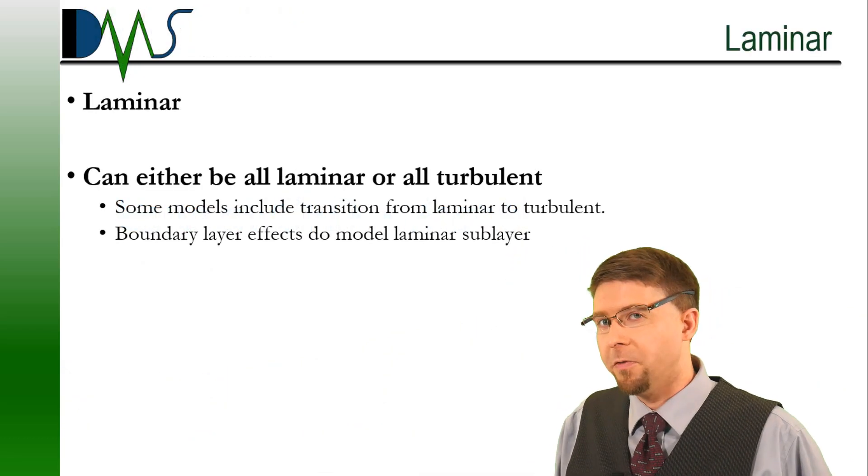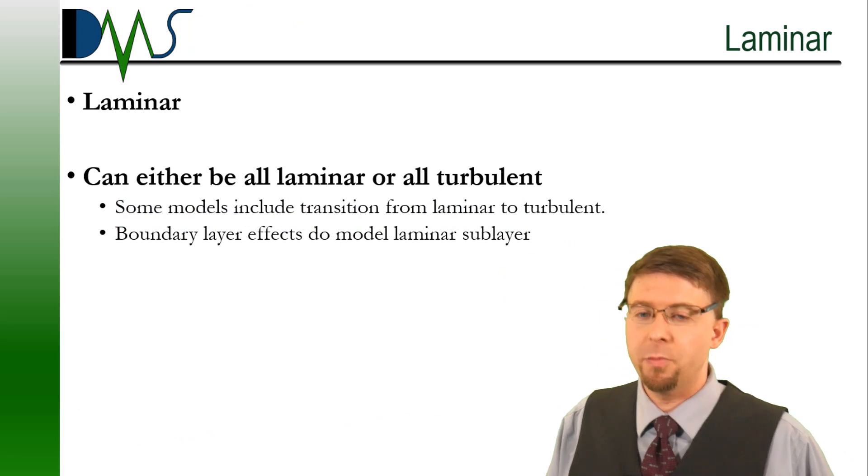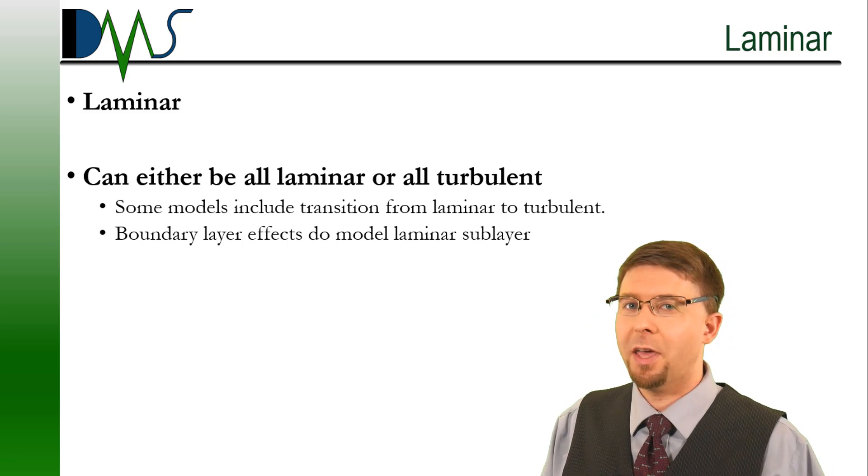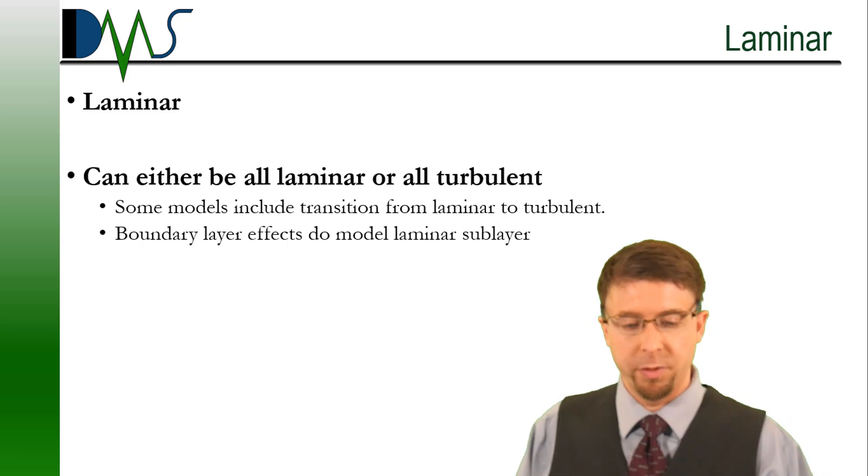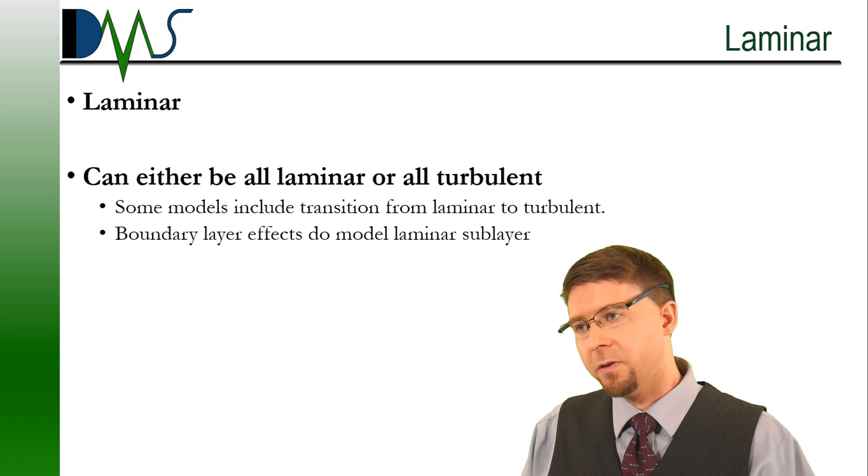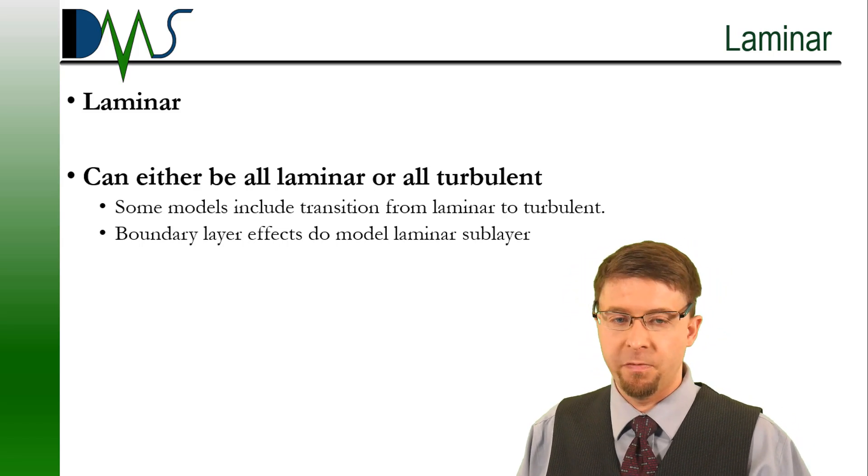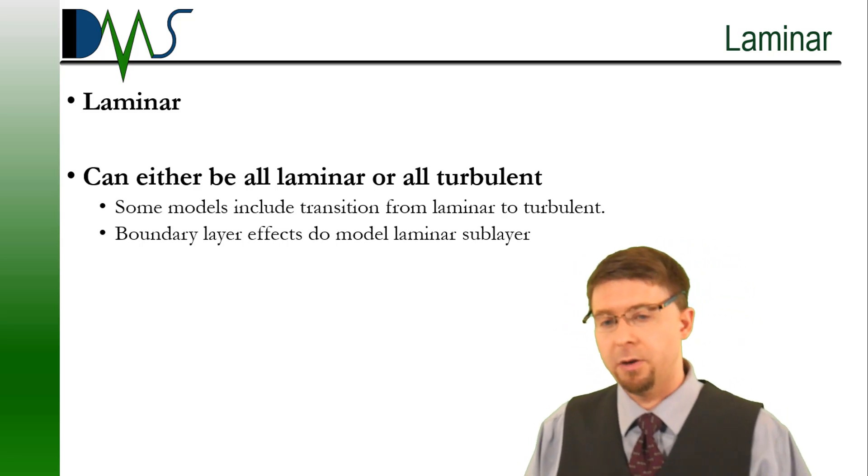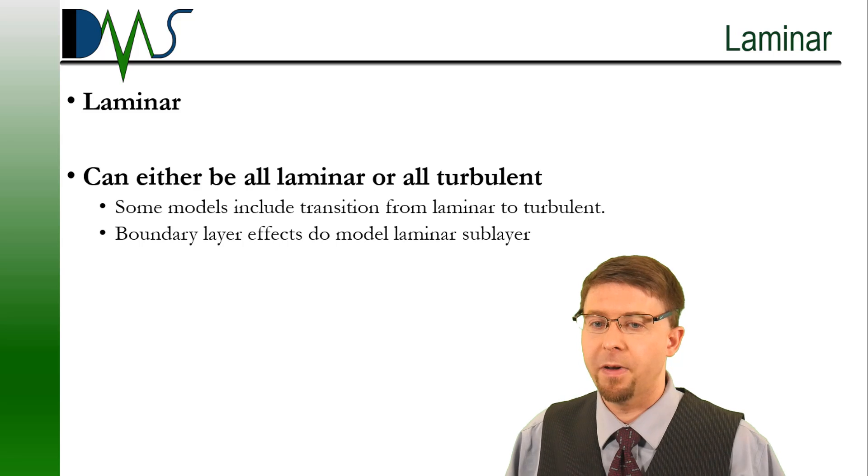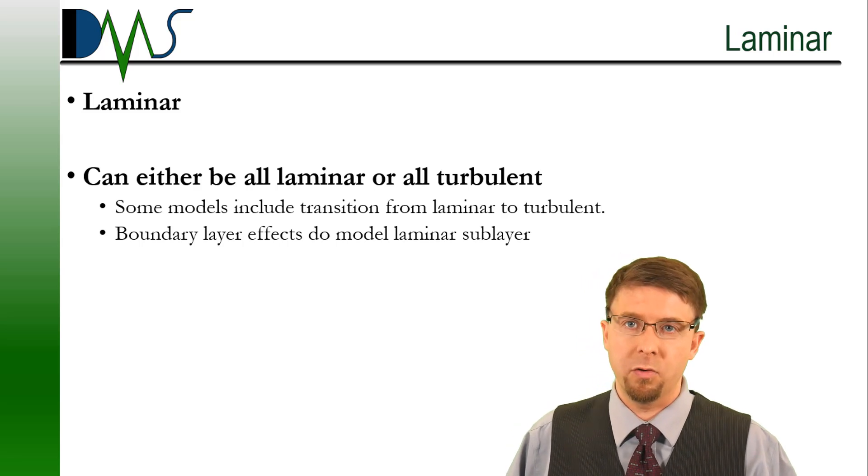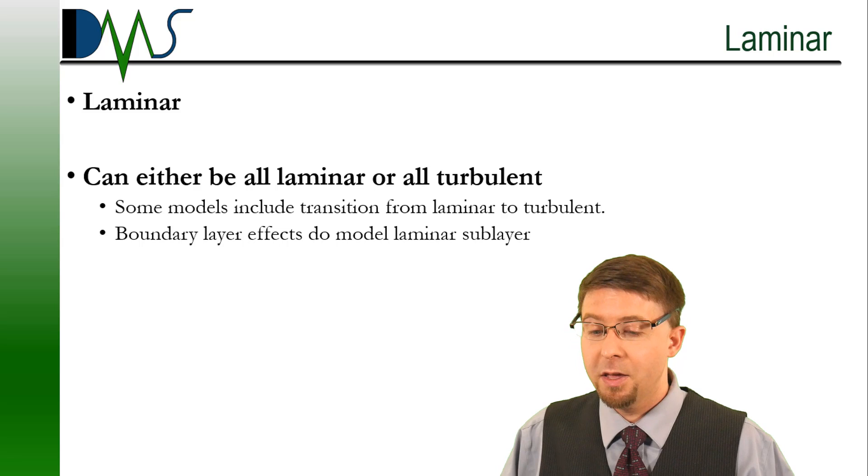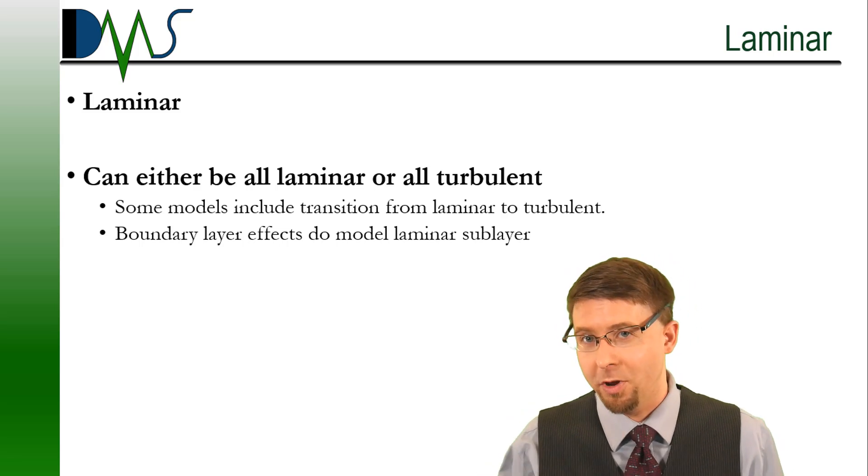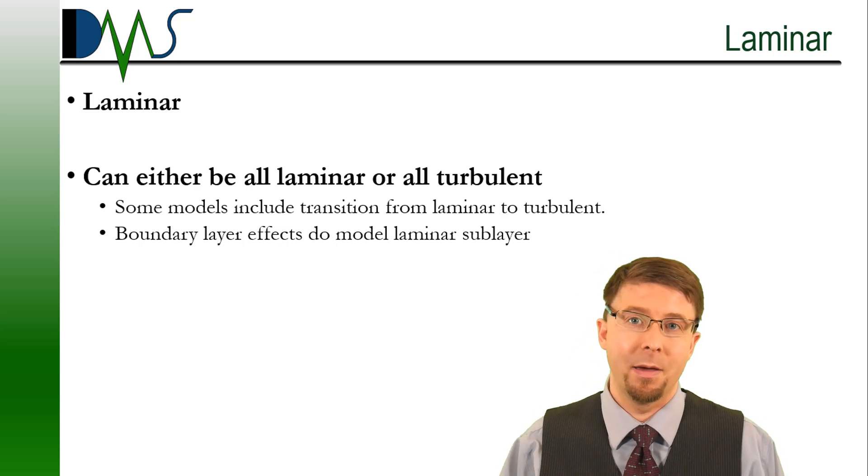The first question that a lot of people forget to ask when considering turbulence in CFD is: is my simulation turbulent? Do you actually have a flow that is going fast enough to be considered turbulent? I would consider a critical Reynolds number to be around 5 times 10 to the 5th. It depends a lot on your simulation and your scenario, but critical Reynolds number of 5 times 10 to the 5th is one that I've heard quite often. If you're below that, you might not actually be turbulent, and so you might actually be better turning off turbulence and having a laminar simulation.